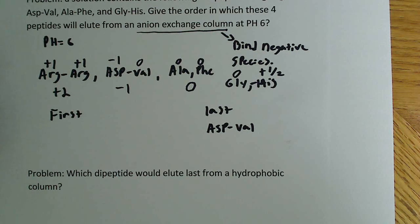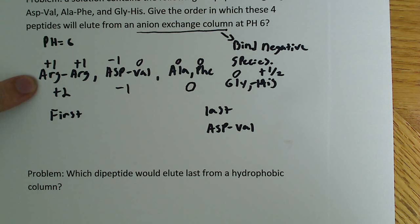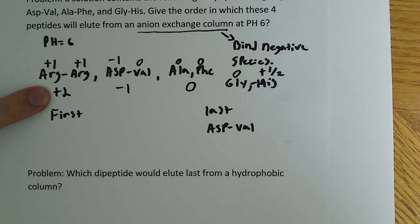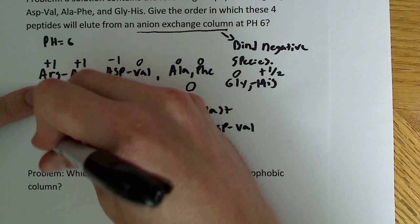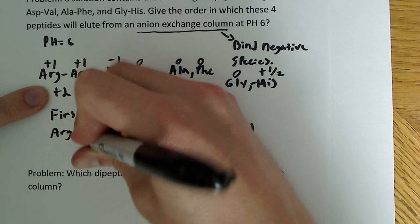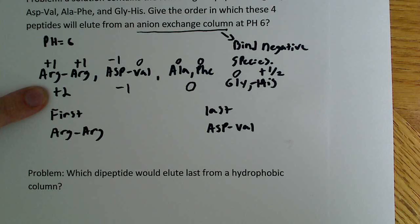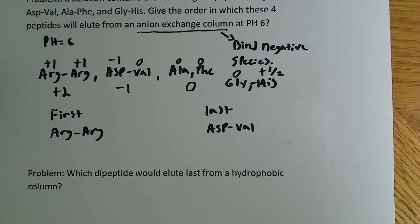The next thing to recognize is that if it's binding negatively charged species tightly, whatever that group is on the column is going to be positively charged. We'll notice here that arginine is positively charged, and this arginine-arginine dipeptide has a plus 2 overall charge. If we remember from physics, like charges repel. So this is actually going to move through the column really fast. And that's how you're going to wind up with your first to elute.